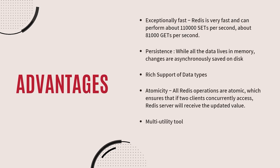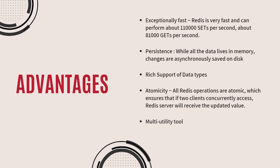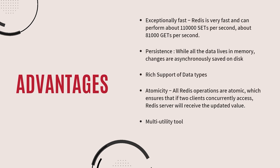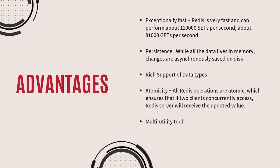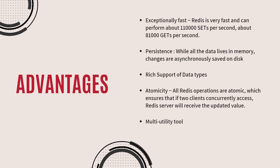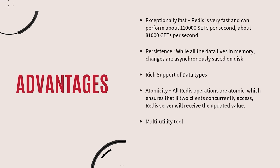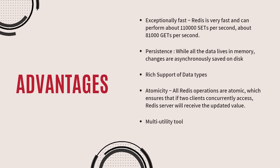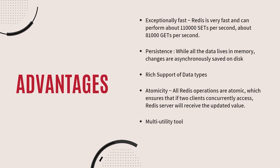Talking about the advantages of Redis, speed is the most important part. Redis stores the whole dataset in primary memory, that's why it is extremely fast — it handles up to 110,000 writes per second and 81,000 reads per second. It also supports pipelining of commands and getting and setting multiple values in a single command to speed up communications with the client libraries.